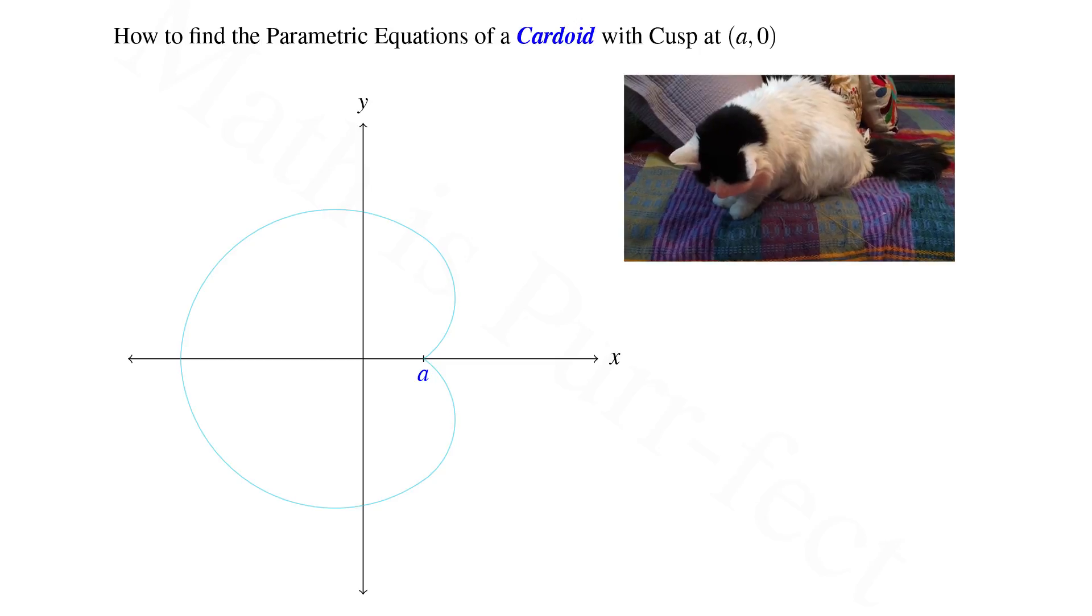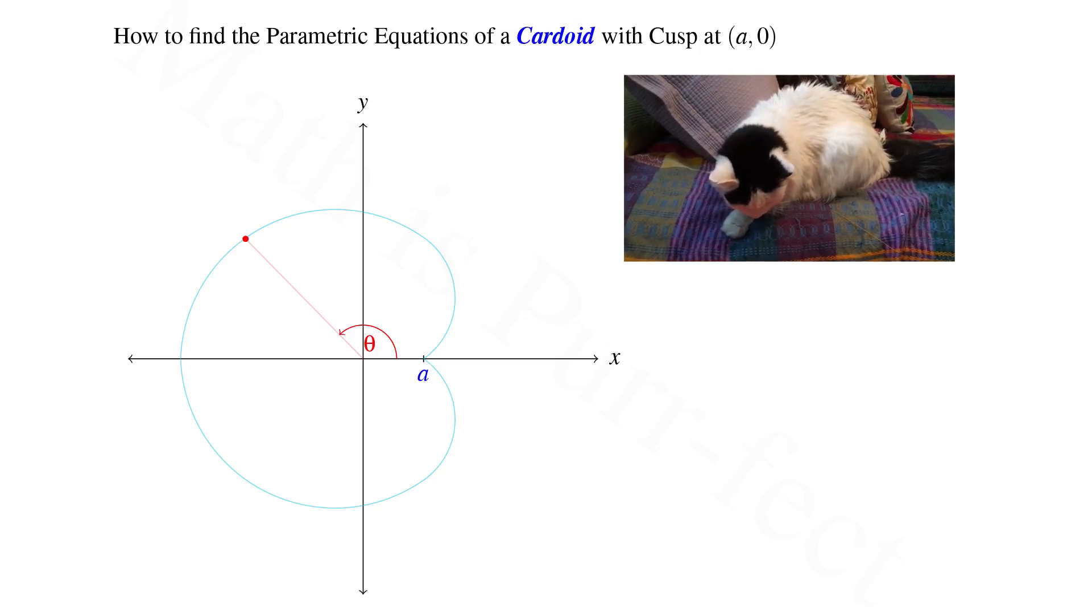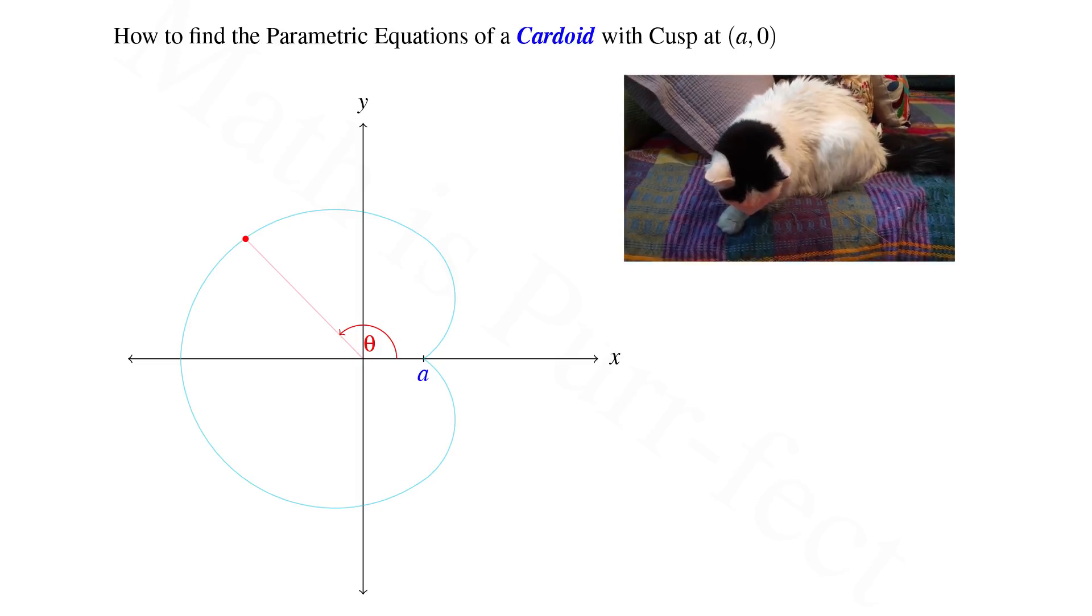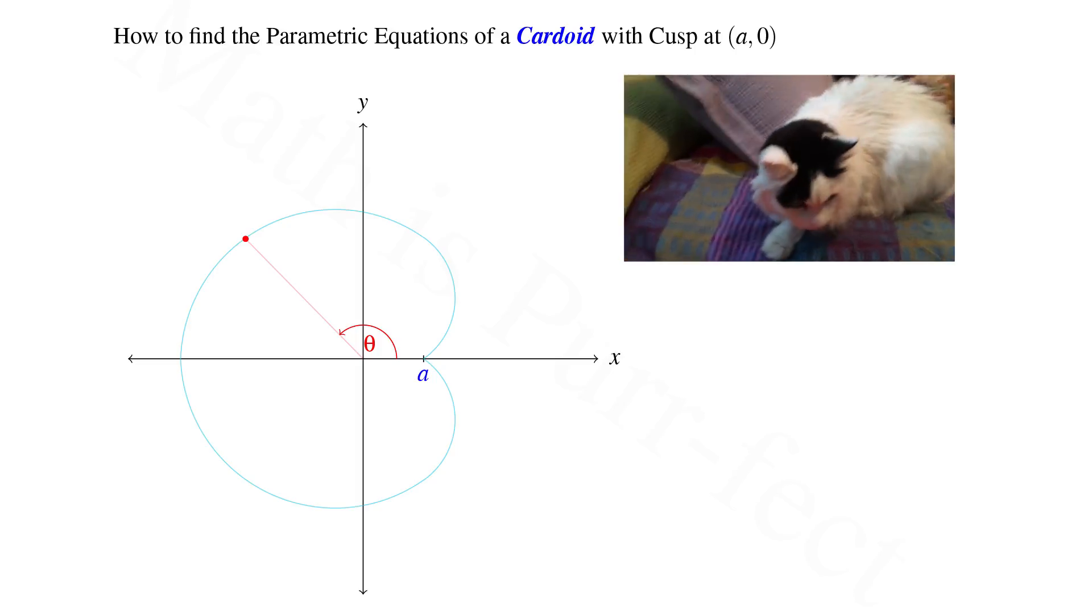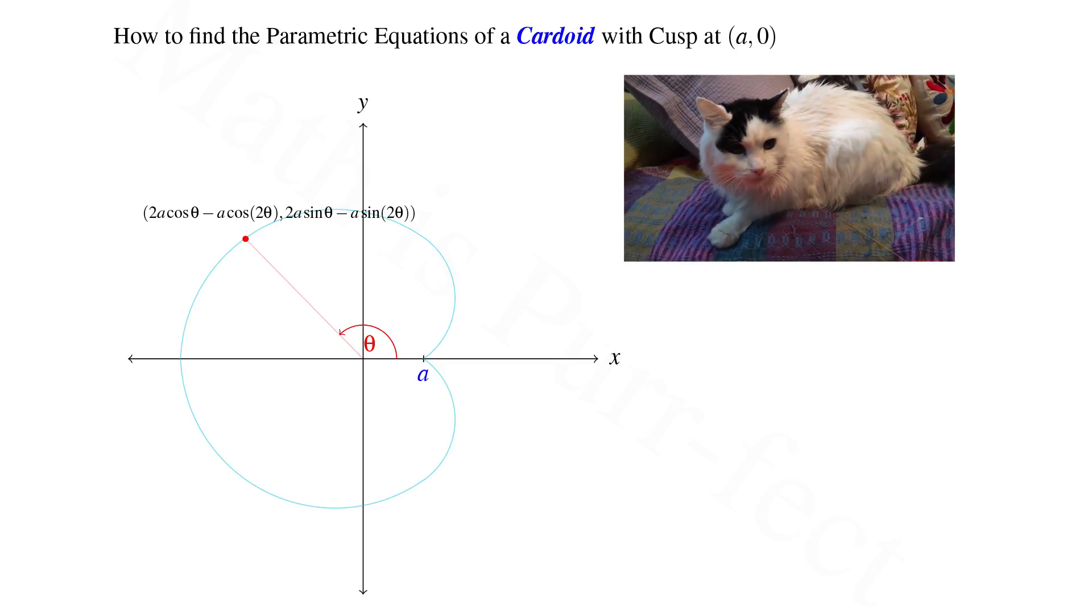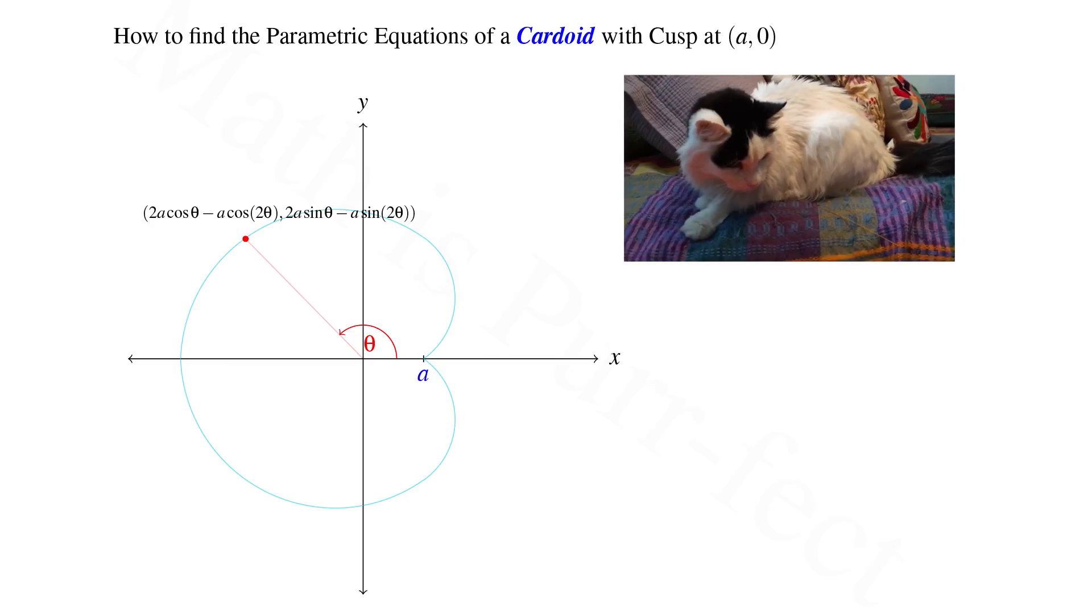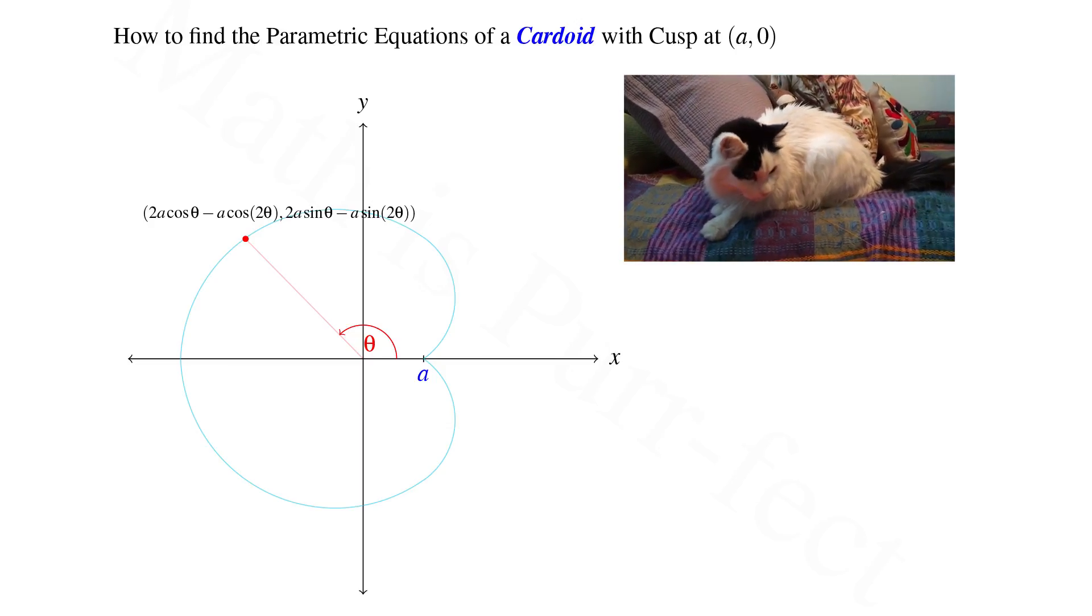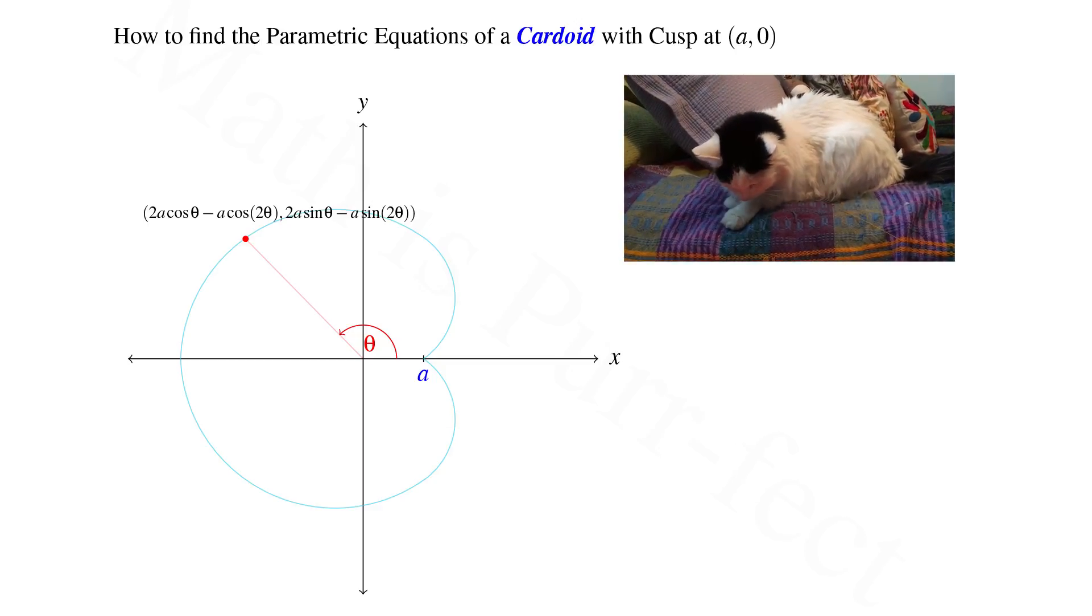So given a cardioid with cusp at a comma 0, any point along its curve at an angle theta with respect to the positive x-axis has x and y coordinates of the form 2a cos theta minus a cos 2 theta, comma 2a sin theta minus a sin of 2 theta, respectively. Thanks for playing, and I'll see you next time.